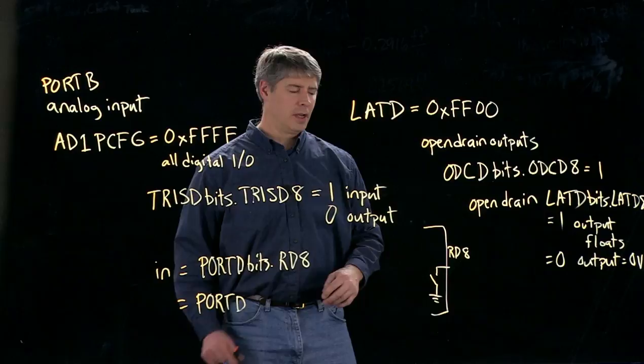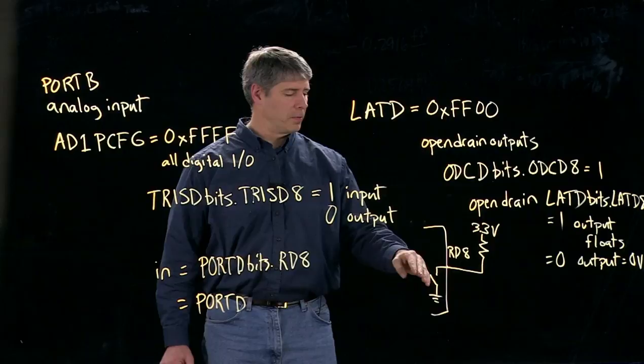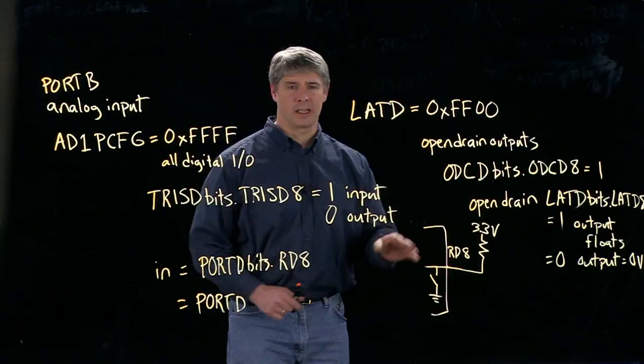But we can also, if we leave it open, then it just floats. We're not assigning a particular voltage there, it's just floating. So if at the output we connected a resistor up to 3.3 volts, then when we write a 1 here, when we write a 0, it's going to pull it down to ground. When we write a 1, it's going to be just sitting there at 3.3 volts.